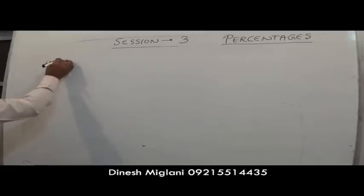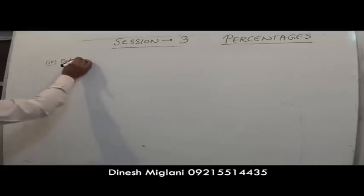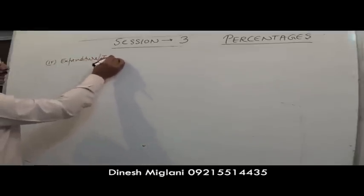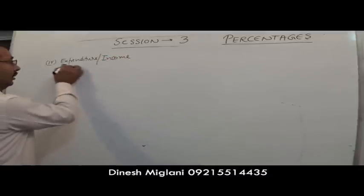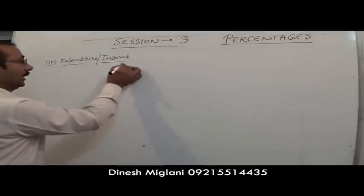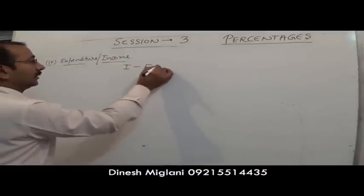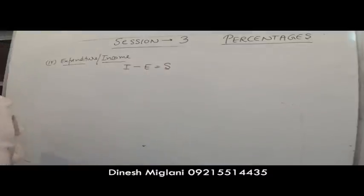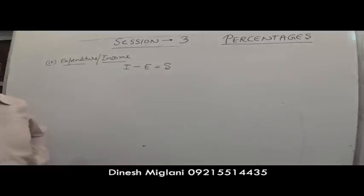Next we have questions based on expenditures and income. As you know, income minus expenditure is equal to savings.